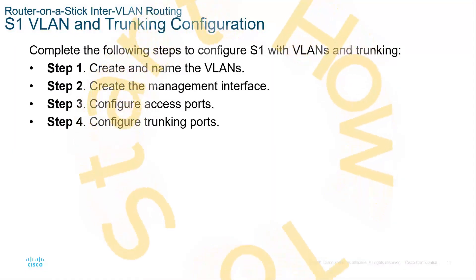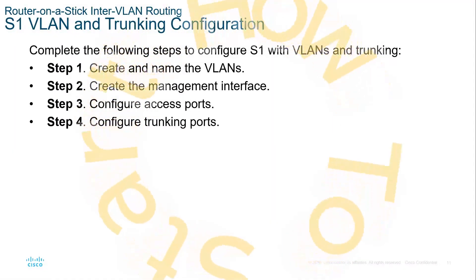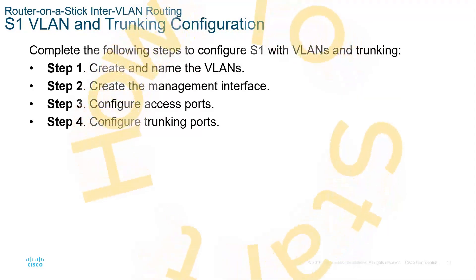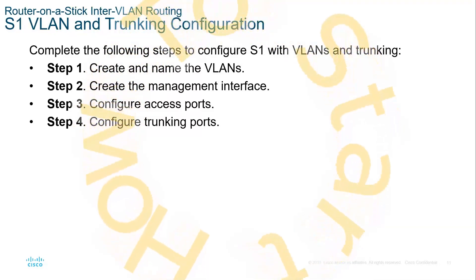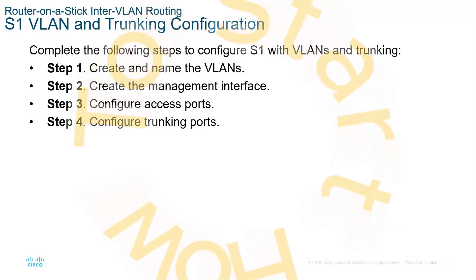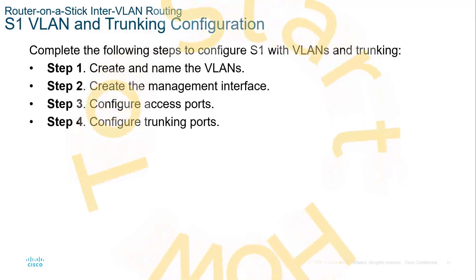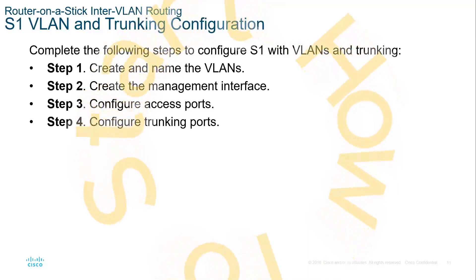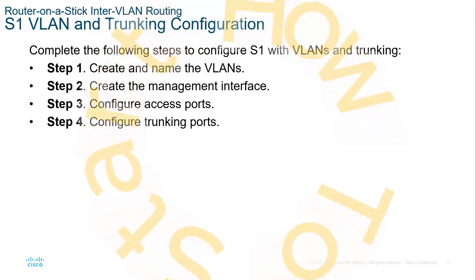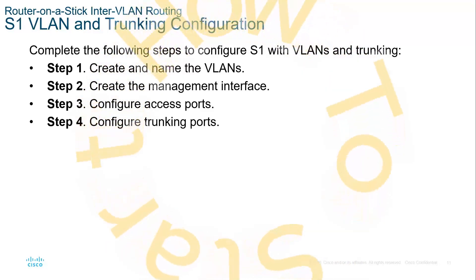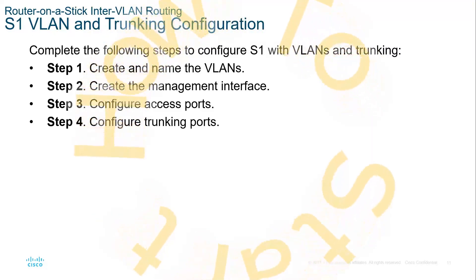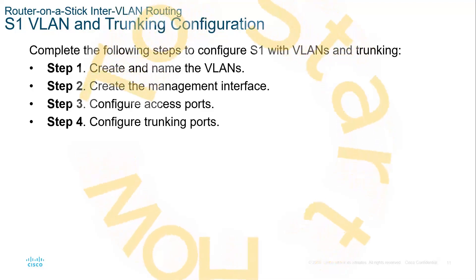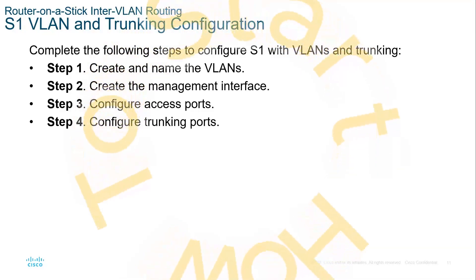To set up inter-VLAN routing, first on the switch we create and name the VLANs. We create the management interface if we're not using VLAN 1, then configure access ports and trunking ports. I always suggest hard-coding these — I don't like using negotiated port types. There are pros and cons to using them, which I've discussed in other videos.